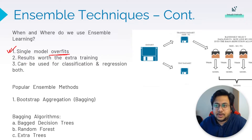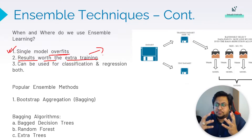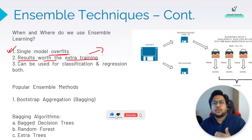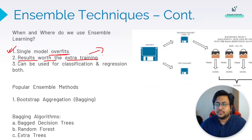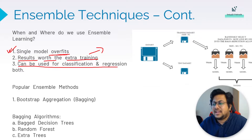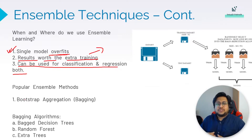When and where do we use ensemble learning? When a single model overfits, we move to ensemble. A key consideration: ensemble is a complex model — a combination of multiple plain models — so it takes more computational time and memory. If you don't have issues with memory and time, you can go for ensemble learning, and it works for both classification and regression.